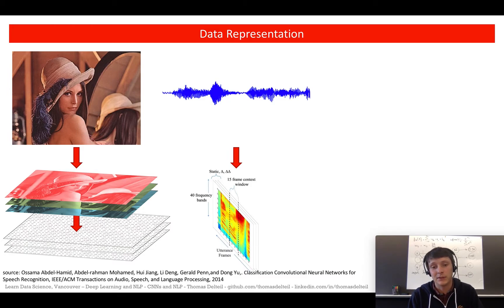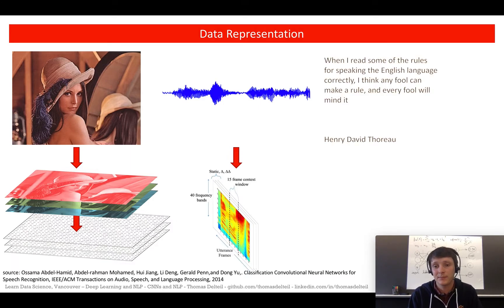For example, there was this paper from Microsoft on speech recognition which took the waveform, the derivative of the waveform and the second derivative, took the frequency analysis and used this as images that were fed into convolutional neural networks. When you have text like this: 'When I read some of the rules for speaking the English language correctly, I think any fool can make a rule and every fool will mind it.' So how do you represent that so that you can apply convolution on them?